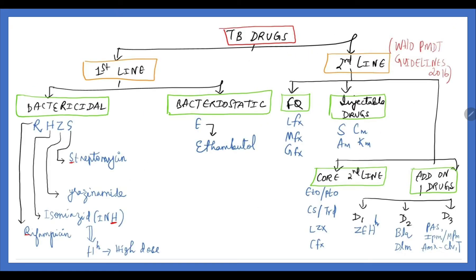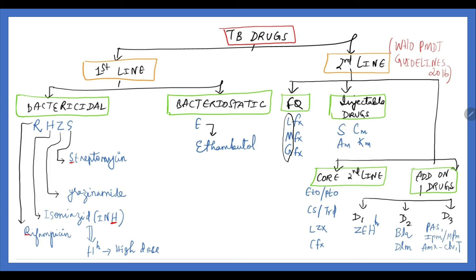Now, the basic classification of TB drugs. Second-line fluoroquinolones — remember L, M, F: Levofloxacin, Moxifloxacin, and Gatifloxacin. For injectable second-line drugs, remember SCAM: S for Streptomycin, C for Capreomycin, A for Amikacin, and K for Kanamycin.